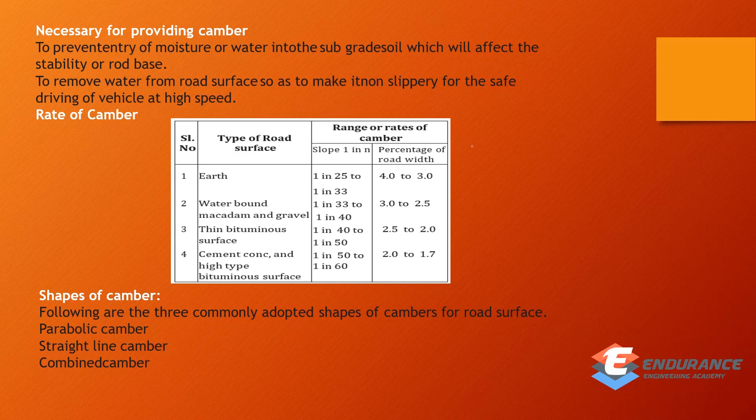The rate of camber: for earth roads, the slope is 1 in 33 and the percentage of road width is 4 to 3. Water-bound gravel road is 1 in 33 to 1 in 40, and percentage of road width is 3 to 2.5. Cement concrete road and high-type bituminous surface road is 1 in 50 and percentage of road width is 2 to 1.7.